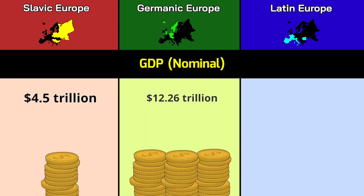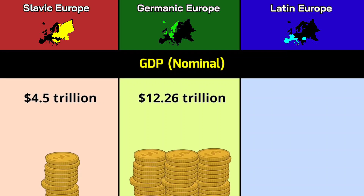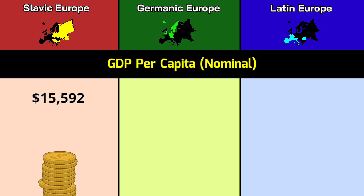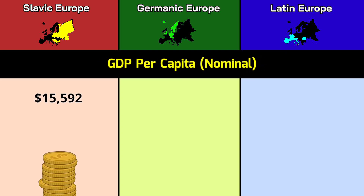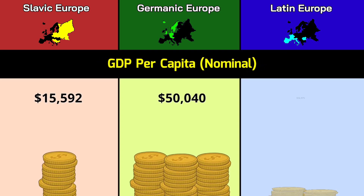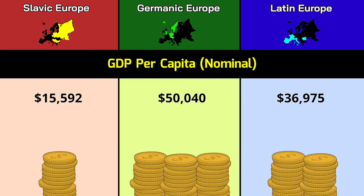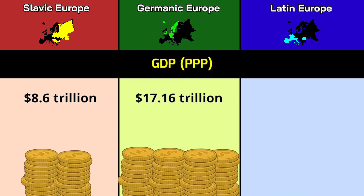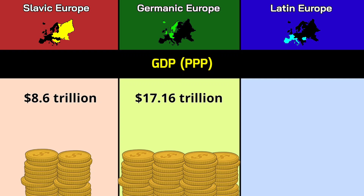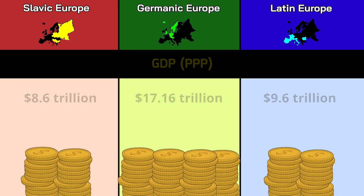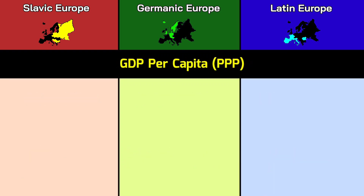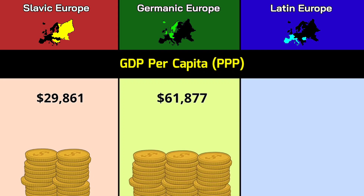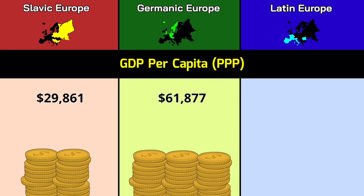GDP nominal: 4.5 trillion dollars, 12.26 trillion dollars, 7.58 trillion dollars. GDP per capita: $15,592, $50,040, $36,975. GDP for PPP: 8.6 trillion dollars, 15.16 trillion dollars, 9.6 trillion dollars. GDP per capita for PPP: $29,861, $61,877, $48,829.